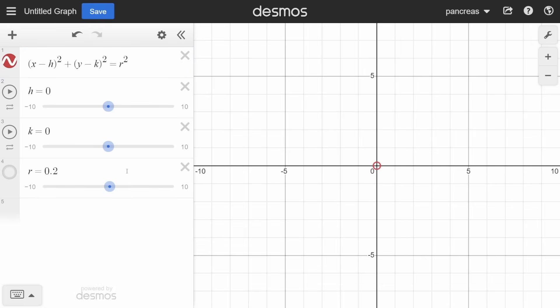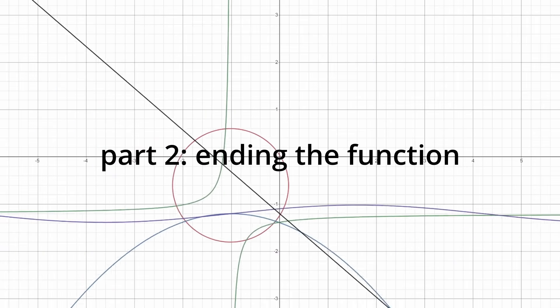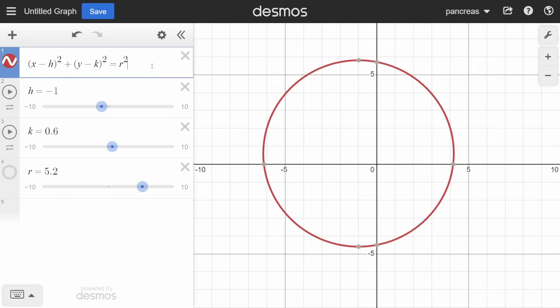Lastly we have the circle. 'r' is the radius of the circle. Similarly to the quadratic function, 'h' shifts the curve left and right, and 'b' shifts the curve up and down.